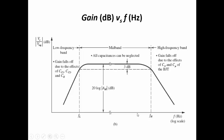The difference between the upper and lower cutoff frequency determines the bandwidth of the amplifier. The maximum gain is in the mid-band region, and the gain-bandwidth product is simply the product of the gain and the bandwidth of the amplifier.